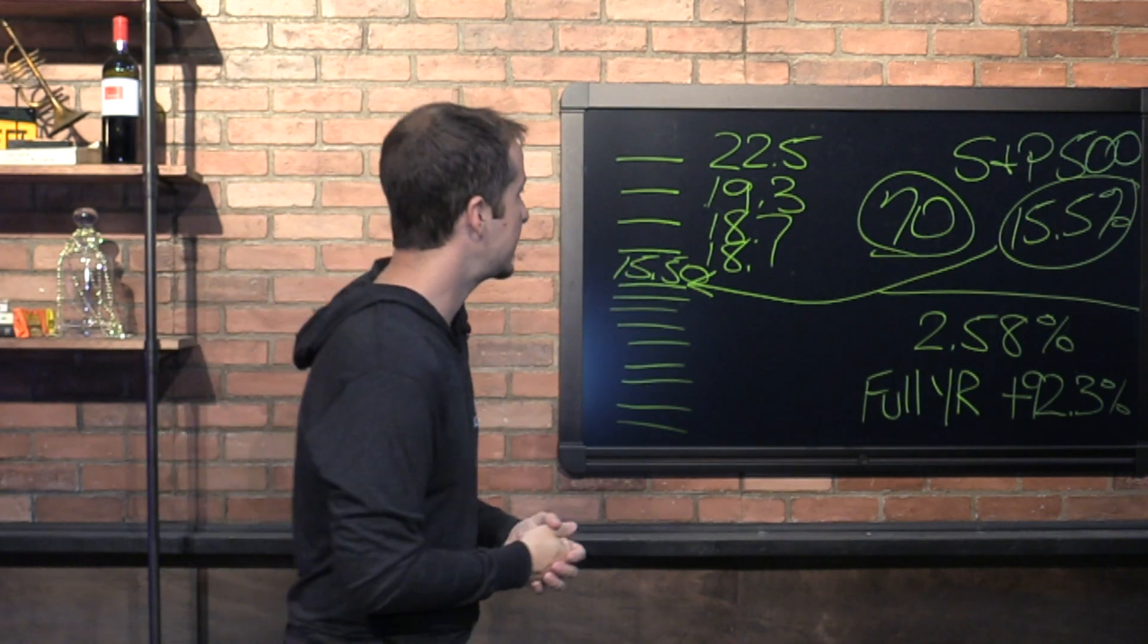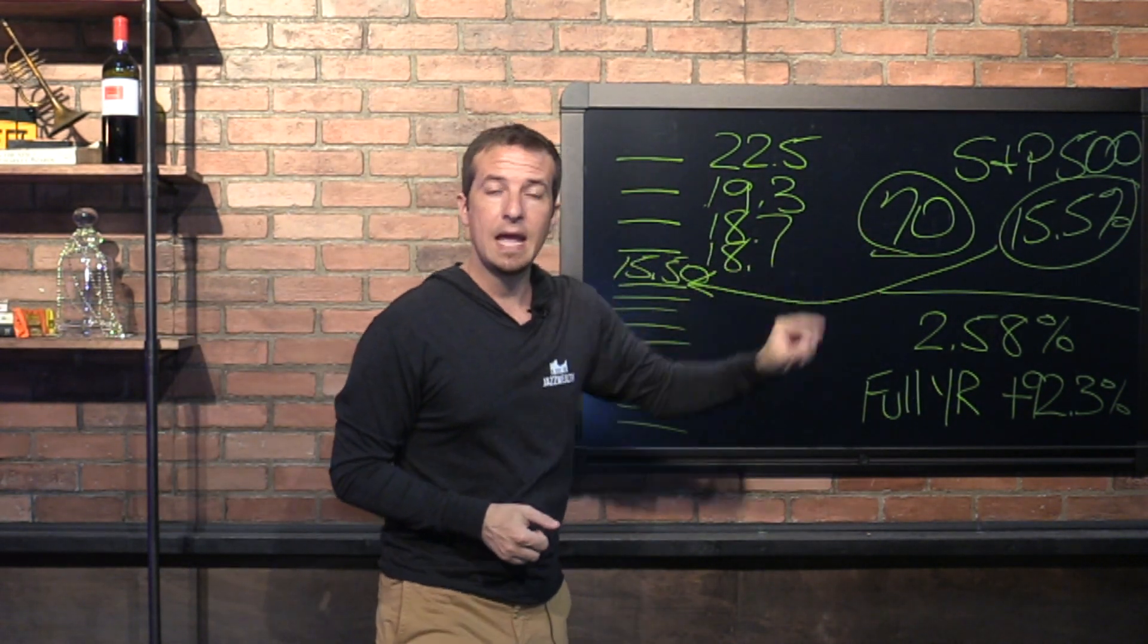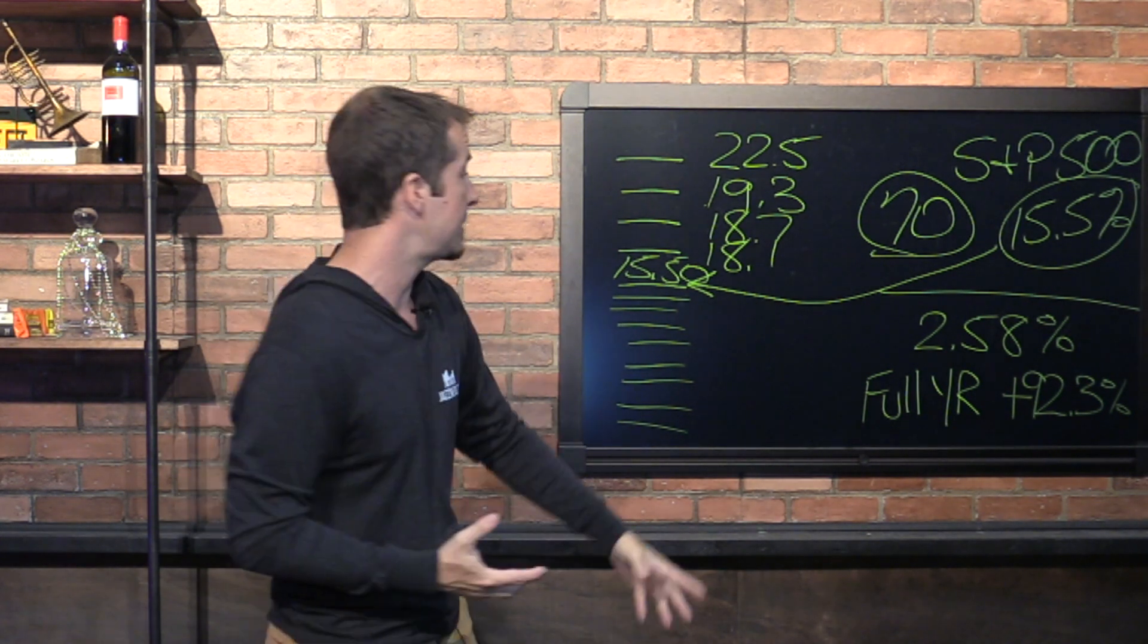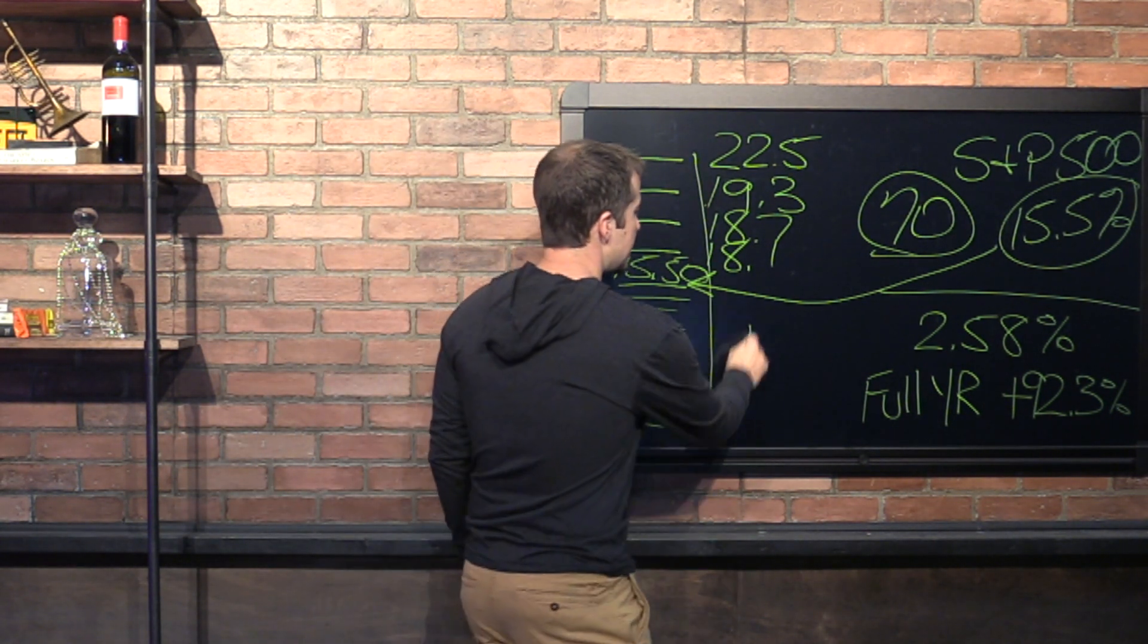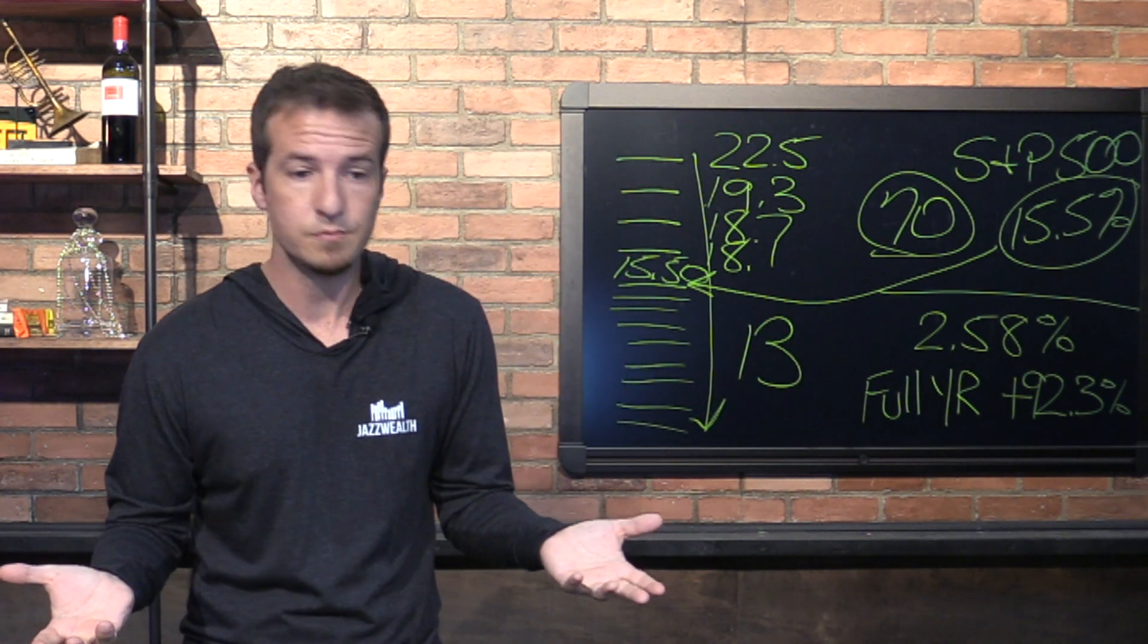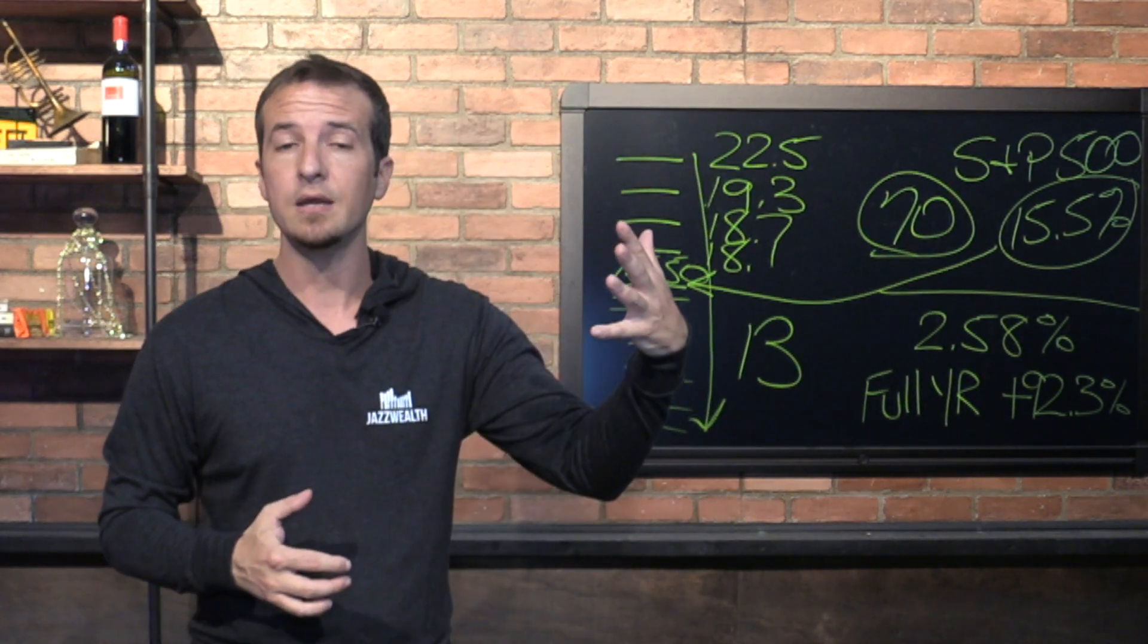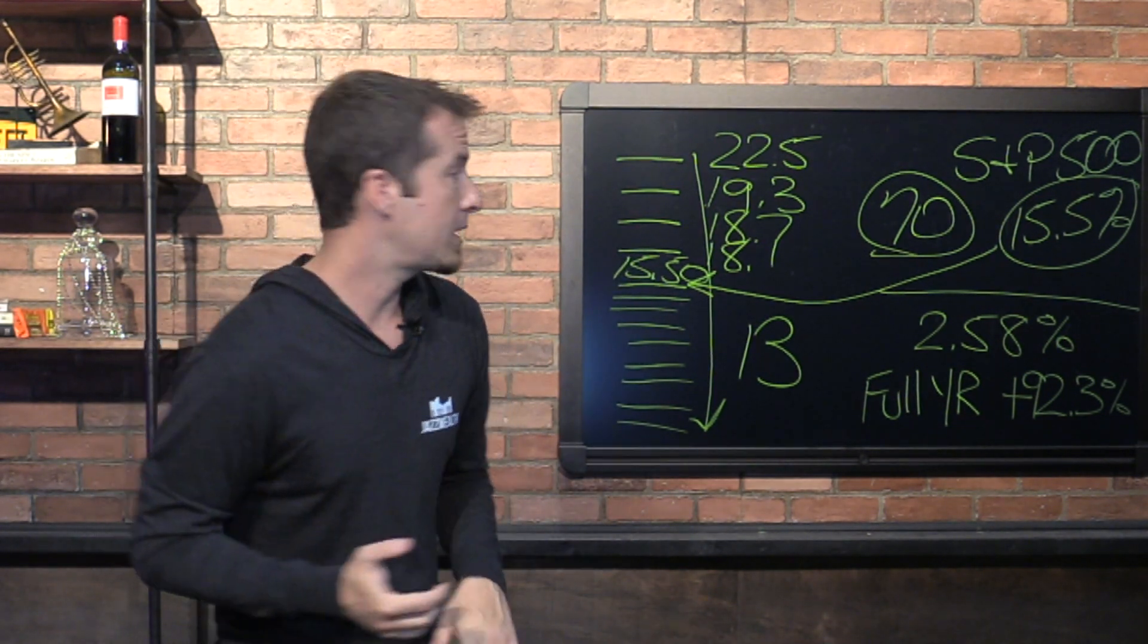So we put this list together and said, how often has the S&P started the first 70 days with a gain of at least 10%? In fact, there are a total of 13 times that this has happened in history. So it's a really rare sort of event. You go back all the way to 1928, and you can only find 13 years where the markets have gained at least 10% in the first 70 days.